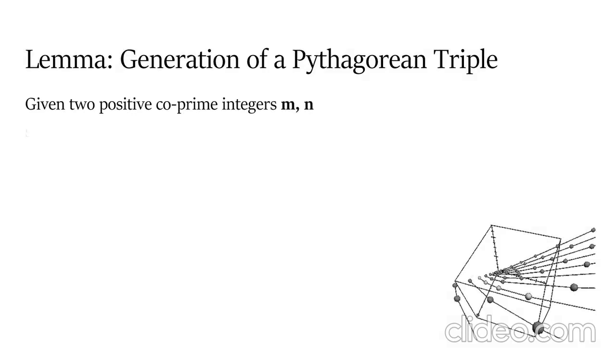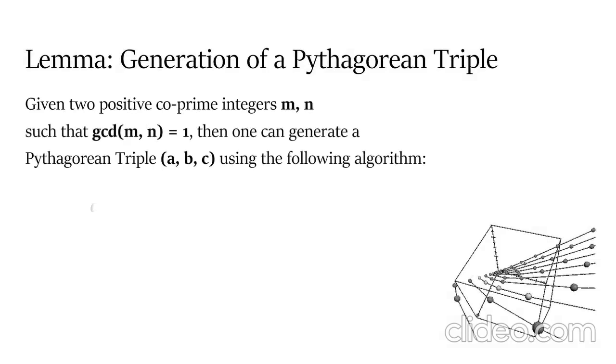Generation of a Pythagorean triple: Given two positive co-prime integers m and n, one can generate a Pythagorean triple using the following algorithm. We will set a equal to m squared minus n squared, b equal to twice the product of m and n, and c equal to m squared plus n squared.